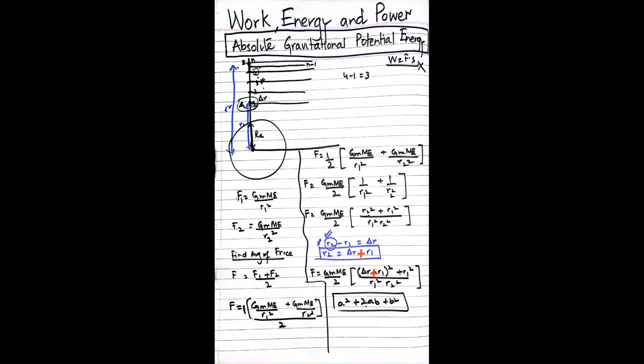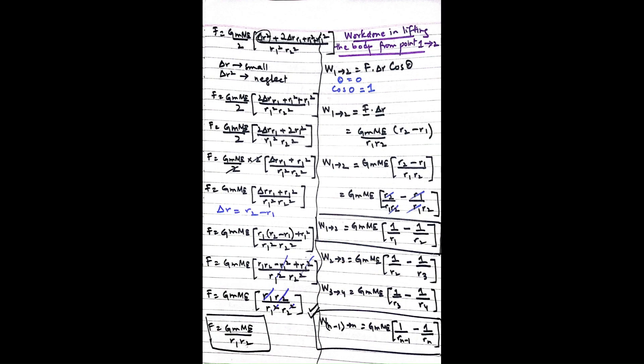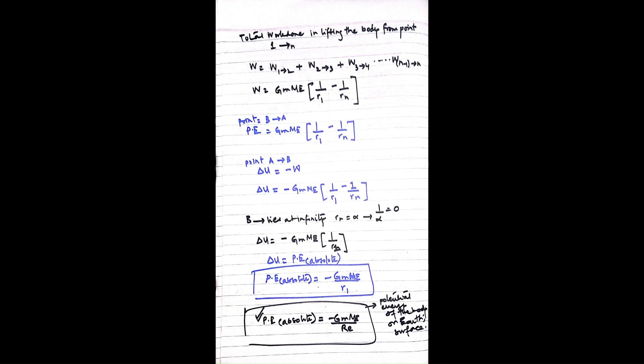A quick note: in the pictures I'm adding, where I wrote r₂ = Δr + r₁ in orange, there is a plus sign. But in the video I mistakenly said minus — that was a verbal mistake. I edited it out and put the correct plus sign. Please don't get confused by that. Also, sorry about the small background noise. Allah Hafiz again, and don't forget to subscribe.